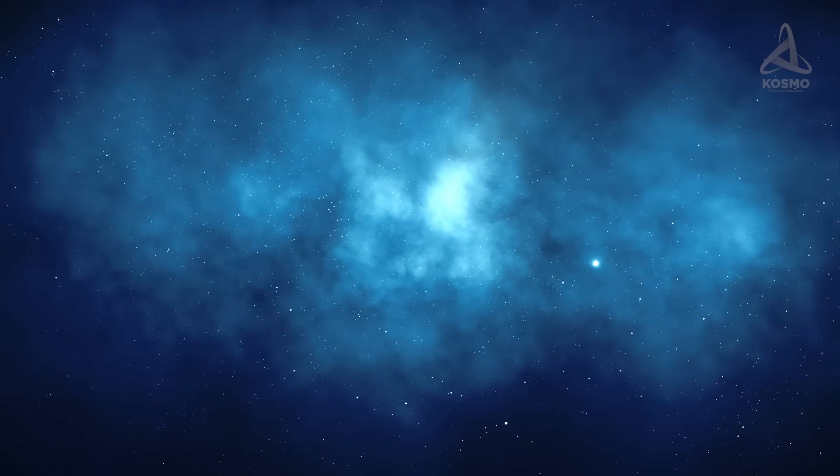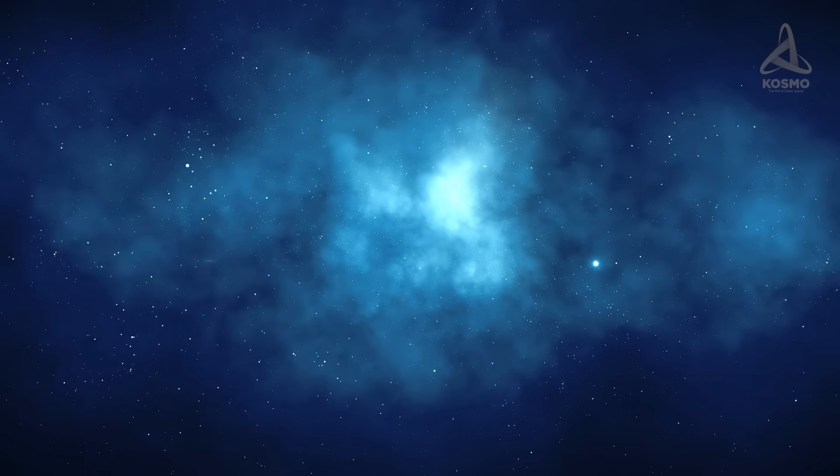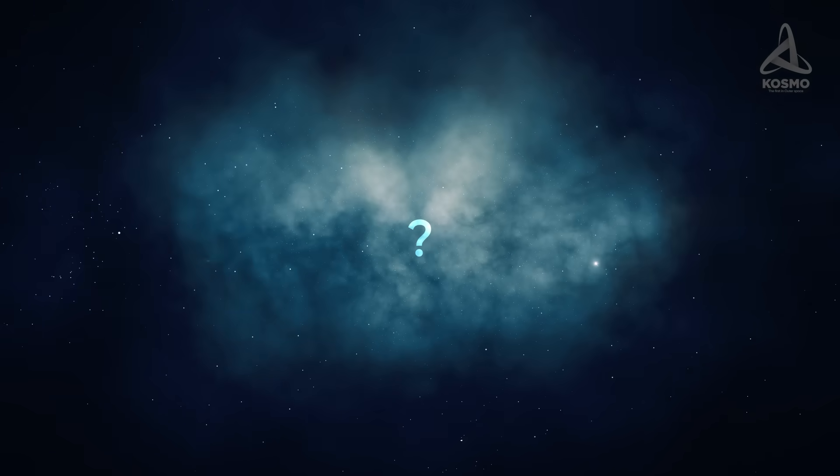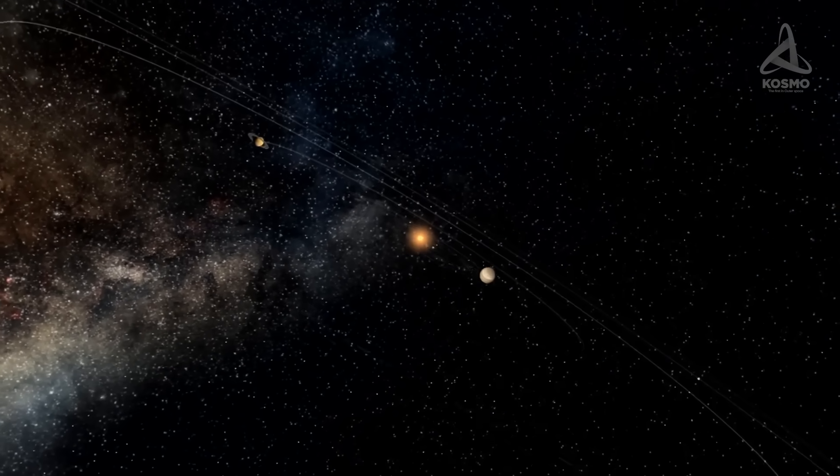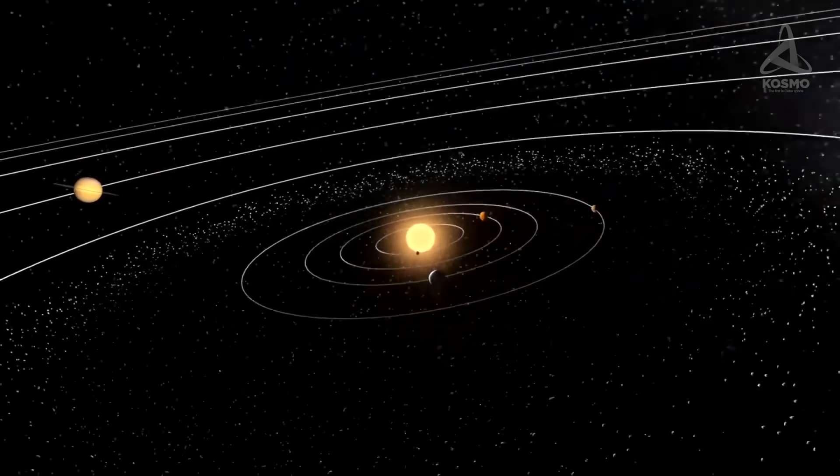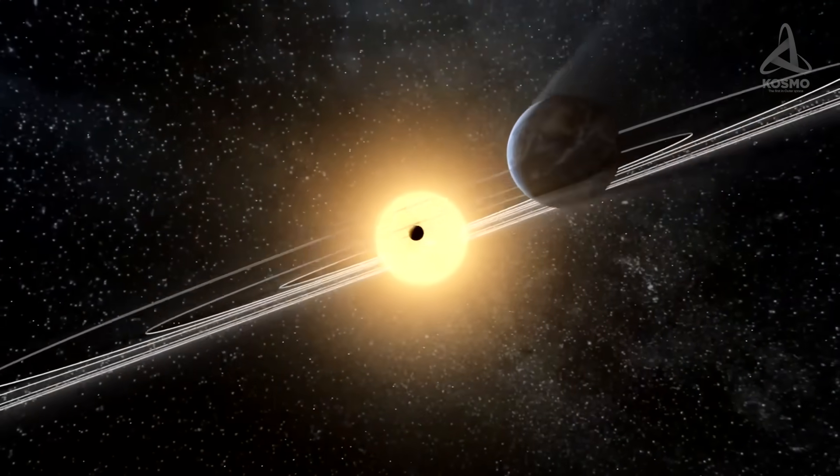Before we get started, we have to decide what it is we are looking for. What could be called the center of the Universe? The central point of the Solar System is the common center of the masses of all the objects it is comprised of, which in essence is almost at the center of the Sun.